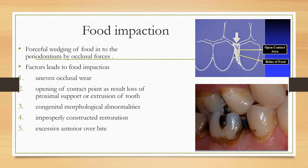Coming to food impaction: forceful wedging of food in the periodontium by occlusal forces is called food impaction. You can see in this picture there is an open contact between the teeth, and the opposing tooth acts as a plunger to wedge food inside the space. Various factors that lead to food impaction include uneven occlusal wear, opening of contact point due to loss of proximal support or extrusion of tooth, congenital morphological abnormalities, improperly constructed restorations, and excessive anterior overbite.